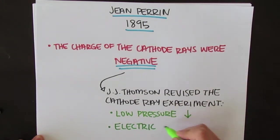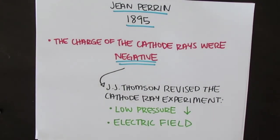As well, he added in an electric field by adding in positively and negatively charged plates. Lastly, he applied a magnetic field through placing a magnet around the cathode ray tube.